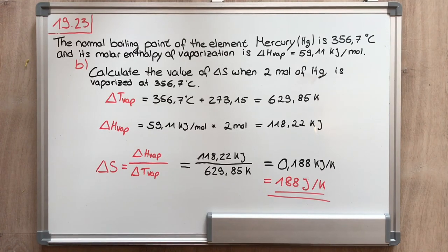Now we put the calculated facts into the formula of entropy. The formula is the entropy of vaporization divided by the temperature of vaporization. My result for the entropy of mercury is 187.8 Joule per Kelvin.